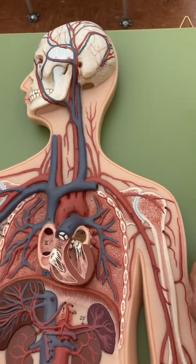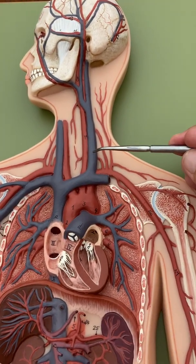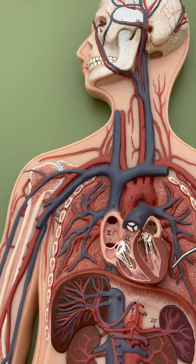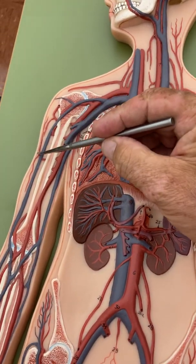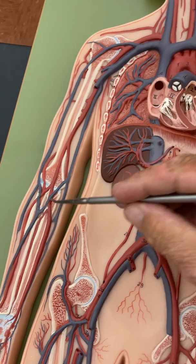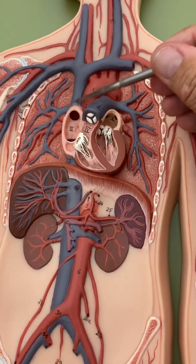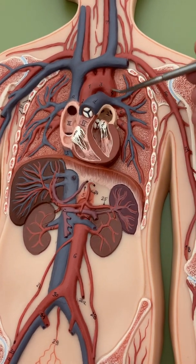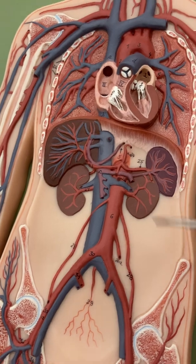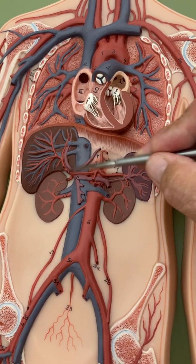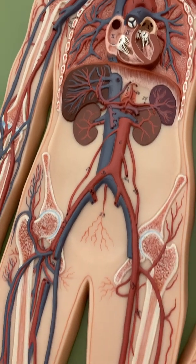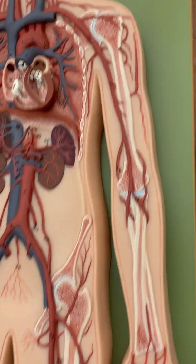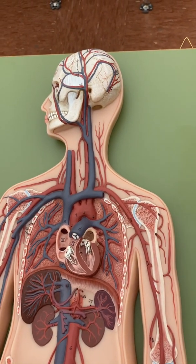So in the veins, we just had a few differences: we had jugulars instead of carotids; we had two brachiocephalic veins instead of one; we added the cephalic vein and the basilic vein; we added the median cubital vein; we had vena cavas instead of an aorta — superior vena cava and inferior vena cava instead of one long descending aorta; we had the hepatic portal system; and we had the great saphenous vein.